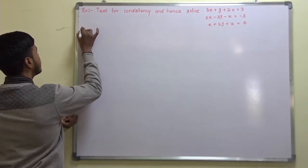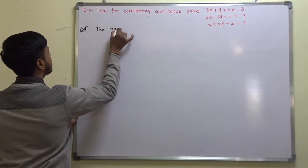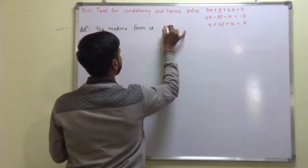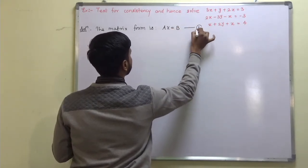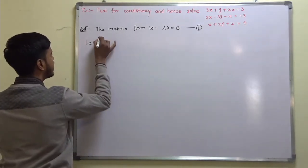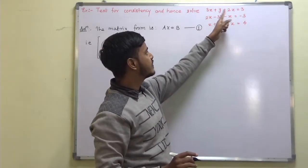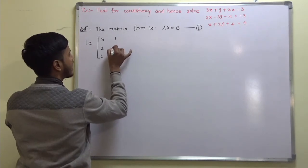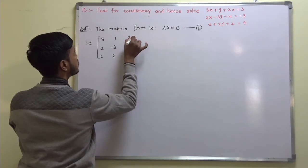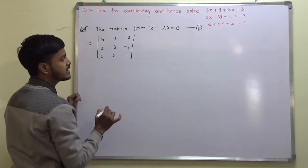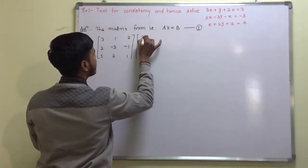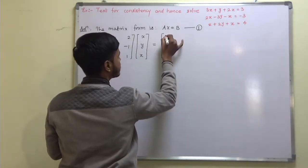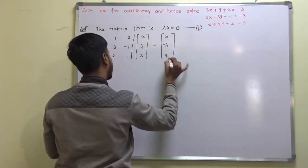So let us start with the matrix form. We write it as AX = b, where A is the coefficient matrix. We write down the coefficients of x, y, z: so the first row is 3, 2, 1; the second row is 1, -3, 2; and the third row is 2, -1, 1. Matrix X is [x, y, z] and b is the matrix of constants: 3, -3, and 4.